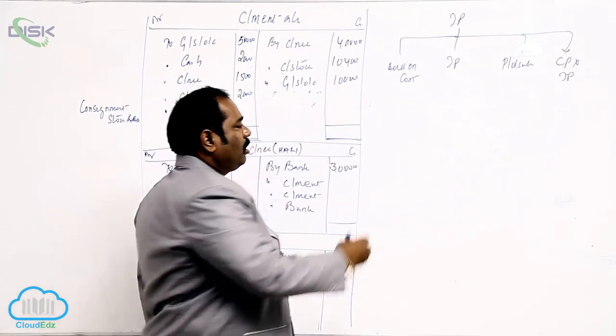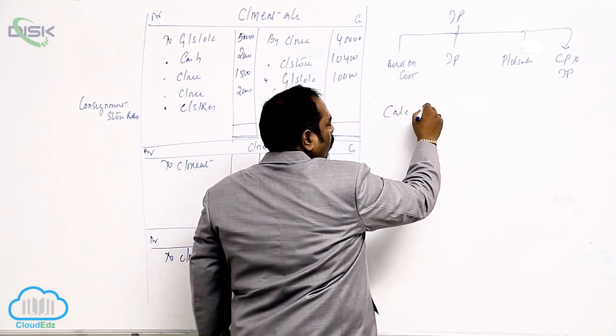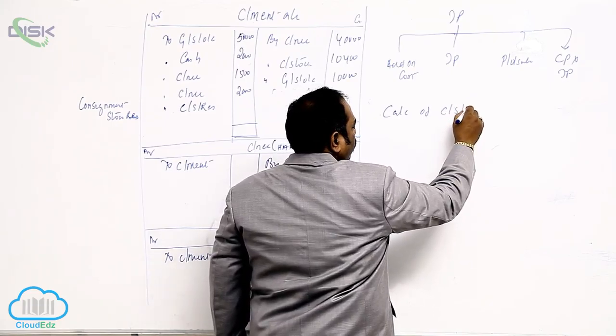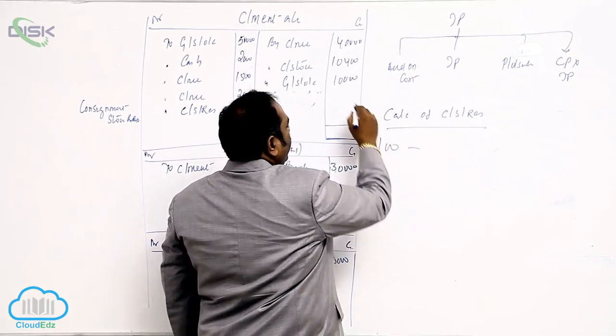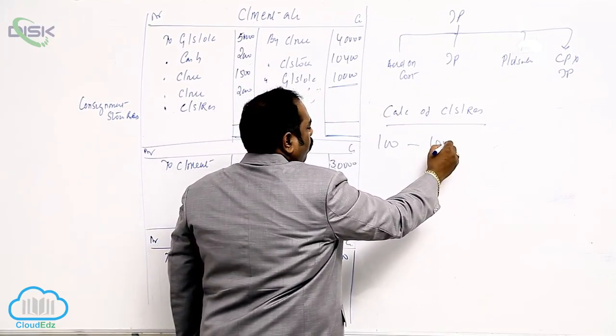What is the extra profit we are adding? Calculation of consignment stock reserve. For 100 cases we are adding extra price. What is the extra price we are adding? 10,000.